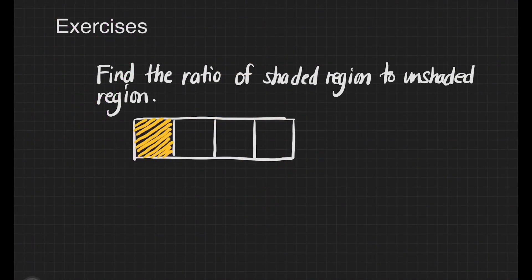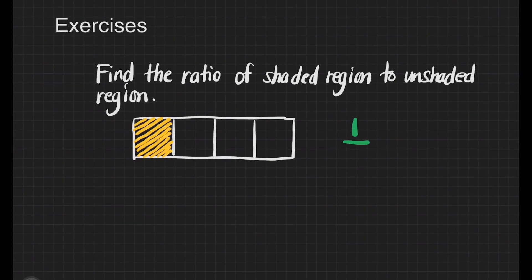Let's find the ratio of the shaded region to the unshaded region. Our answer here is 1 over 3, where 1 is the shaded and 3 is the unshaded region.